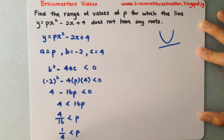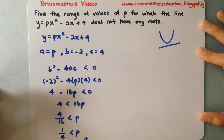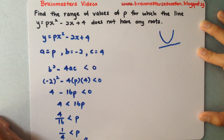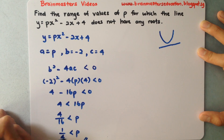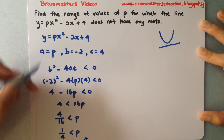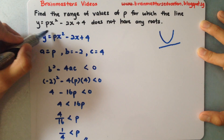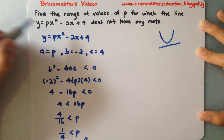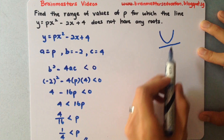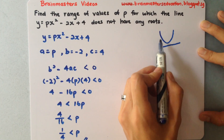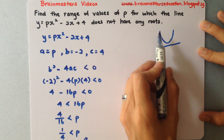So p greater than 1/4 is my final answer. To explain this: for any value of p that is greater than 1/4, if I put it into the equation, it means the line will not cut the curve.